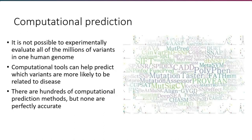The last type of annotator I'll describe is computational prediction. Even with all the types of information described so far, it's not possible to make decisions about the importance of every variant in the human genome. It's not always possible to do experiments or good sequence alignments for a variant. So people have developed many computational tools to help predict which variants are most likely to be related to disease. There are literally hundreds of computational prediction methods, and this is sometimes considered a controversial area because it's unclear which prediction methods are the best, or whether any of them work.